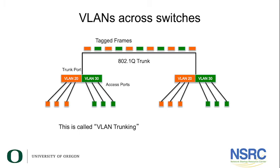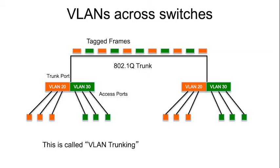In this diagram, we can look at a representation of VLANs across switches. We have two switches, identically configured to the switch from earlier — each one has three nodes in VLAN 20 and three in VLAN 30. We've introduced a trunk port and cable between these switches. All frames flowing between the switches are tagged: orange for VLAN 20 or green for VLAN 30, so the receiving switch can tell which VLAN each frame belongs to.